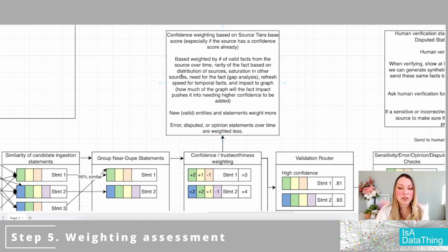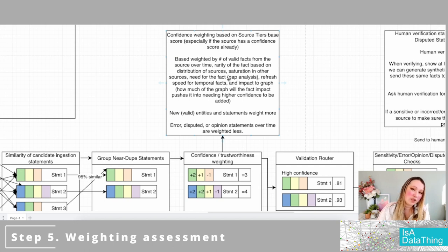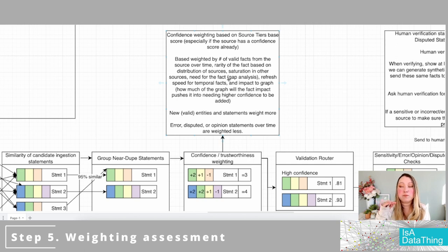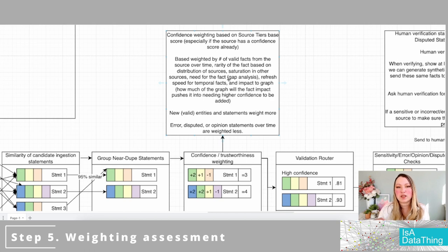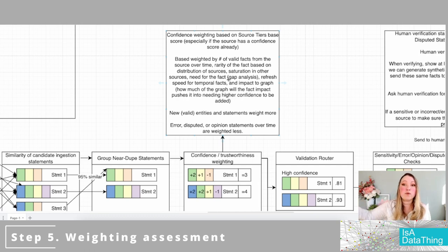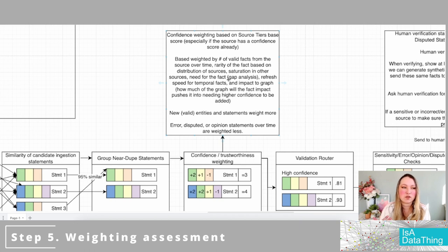You're also going to look at saturation in other sources — how often that statement shows up across all other sources — which is really what the similarity work was about. You'll also look at the need for the fact, which is your gap analysis. Sources have taxonomies associated with them so you can understand your gaps. If you have a gap, you might be more willing to let in something with a lower confidence — not too low — because you really need more data in that space. Or you can go to your sourcing team and get more data sources to support that area.